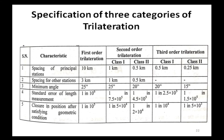Specification of three categories of trilateration — Spacing of principal stations: for first order trilateration it should be 10 km; for second order class 1 it should be 1 km and class 2 should be 0.5 km; for third order class 1 it should be 0.5 km and class 2 should be 0.25 km. Spacing for other stations: for first order trilateration it should be 25 seconds; for second order class 1 it should be 25 seconds and class 2 should be 20 seconds.